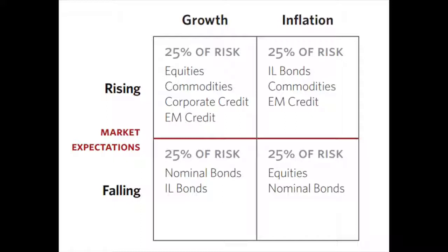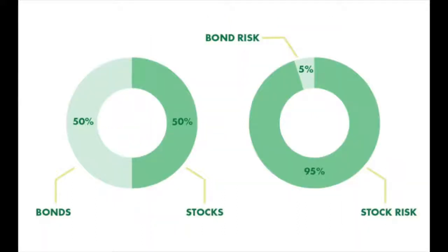Inflation-linked bonds, emerging market credit, equities — you balance around these so that if this happens in the economy, or if that happens in the economy, you are protected. Let's talk about risk allocation.